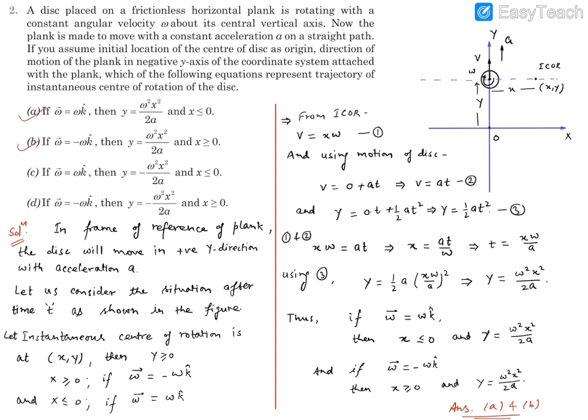And we can say over here that option A and option B are perfectly matching. What about C and D options? They are having this minus sign that means the disk goes downward.